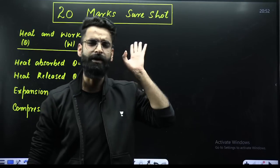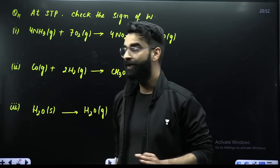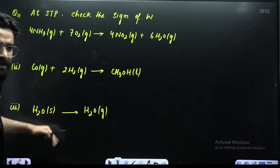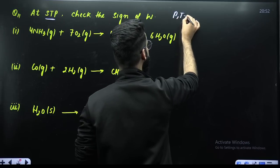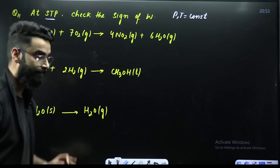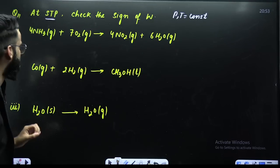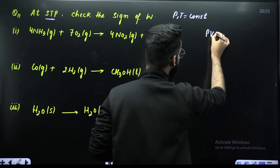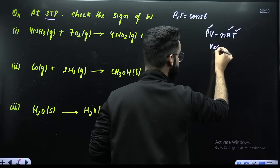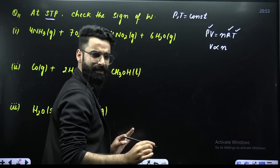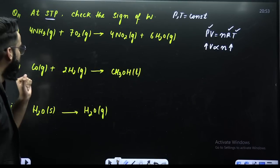From these sign conventions you get a particular type of question. Let's have a look at the question which you get from the sign conventions of Q and W. Dear students, look at these three reactions — all three are carried out at STP, meaning pressure and temperature are kept constant. Now, as you all must know, PV = nRT. Since pressure and temperature are constant, and R is constant, volume is directly proportional to moles. So if moles are increasing, volume will be increasing; if moles are decreasing, volume will be decreasing.